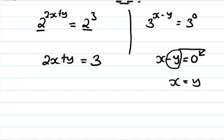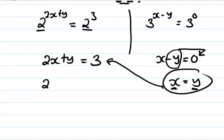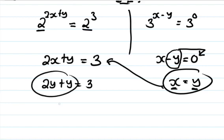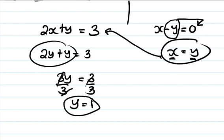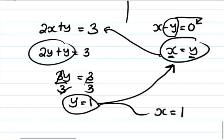From x minus y equals 0, we get x equals y. Substituting into the first equation: 2x plus x equals 3, so 3x equals 3, giving x equals 1. Since x equals y, y is also equal to 1. So the answers are x equals 1 and y equals 1.